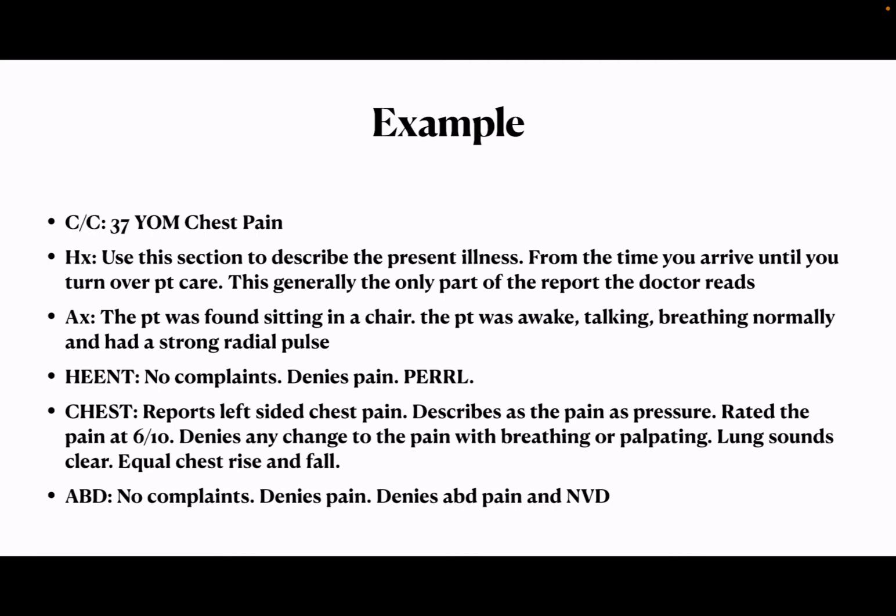Then the complete assessment — these are the abbreviations to get you through that assessment quickly, making it thorough and easy to read. This is where you can include as many pertinent negatives as you like, as detailed as you'd like, depending on the call. A standard statement I like to use is 'no complaints and denies pain.' Under HEENT — head, eyes, ears, nose, throat — you'll get 'no complaints, denies pain,' meaning the patient didn't tell me anything and when I asked, they denied being in pain. And then PERL — pupils equal, round, and reactive to light. That's the standard for HEENT on a chest pain call.